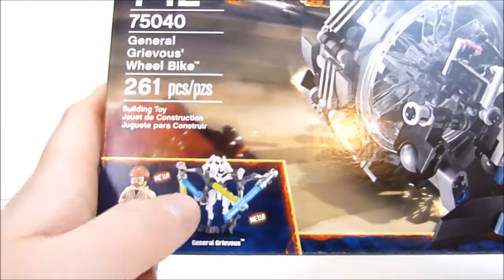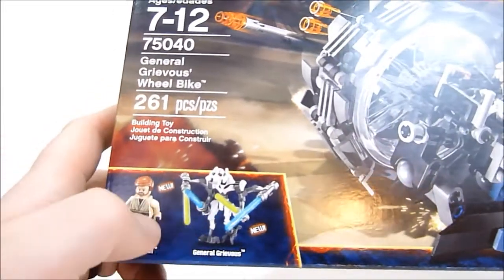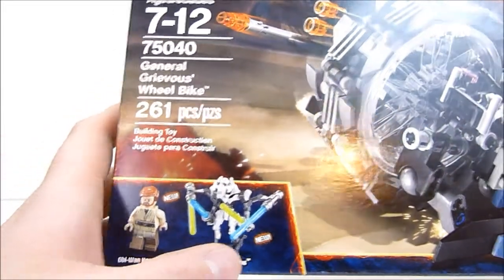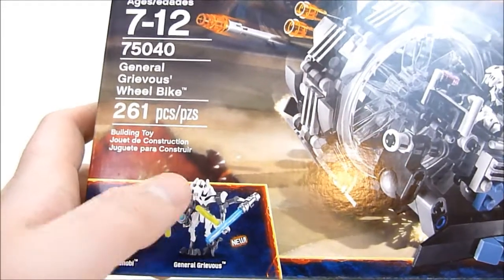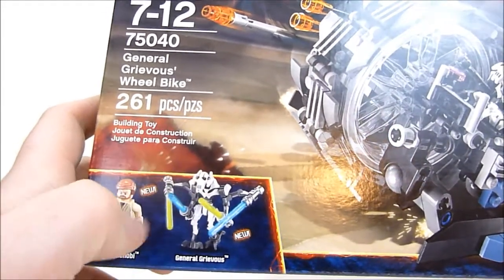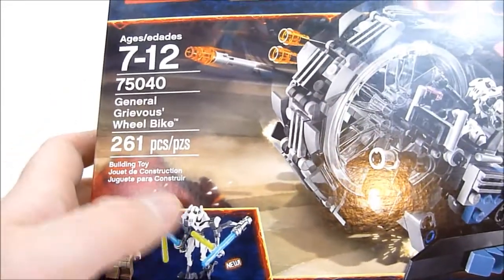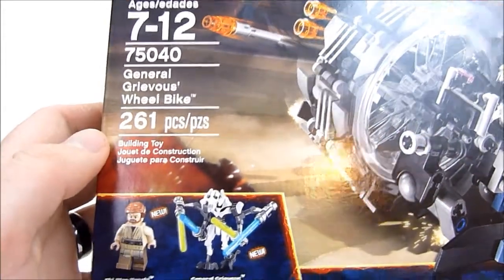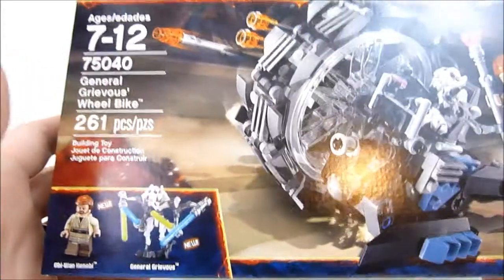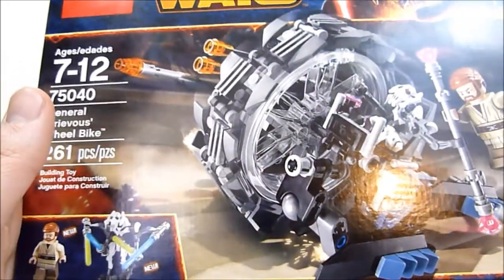You also get two minifigures in this set. You get Obi-Wan Kenobi and General Grievous and both are listed as new figures. Though I could have sworn that I had already gotten this General Grievous in another set. Maybe there is a slight variation, maybe there's a color difference or something like that. But it says it's new, so I'm going to trust them on this one.